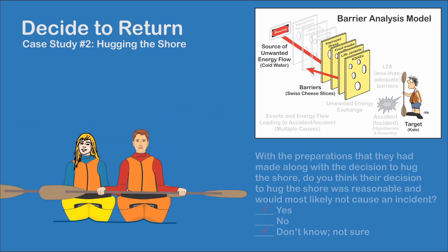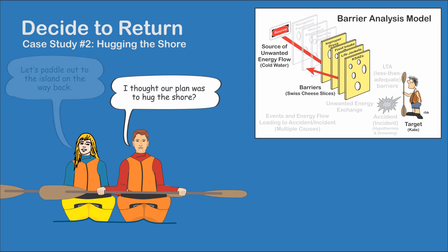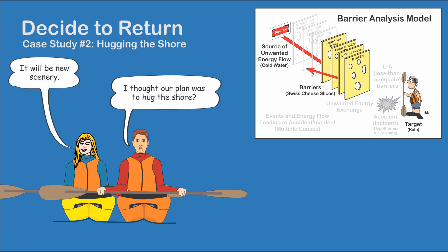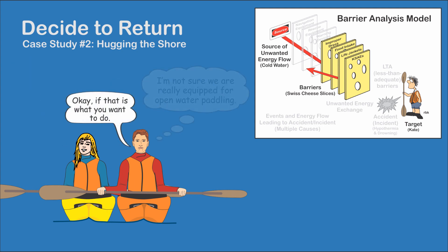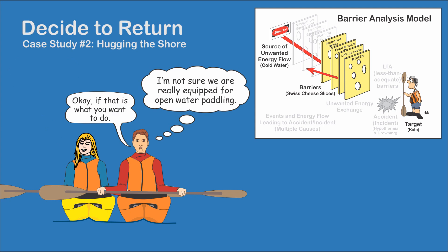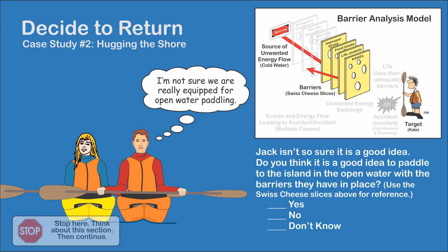Kate and Jack take a break in the cove. Kate decides she wants to paddle out in the open water toward a distant island, and Jack acquiesces. This may seem to be a small change, but in terms of the barrier analysis factors, it is a major change. Review the barrier analysis discussed — in your opinion, was this a good decision?